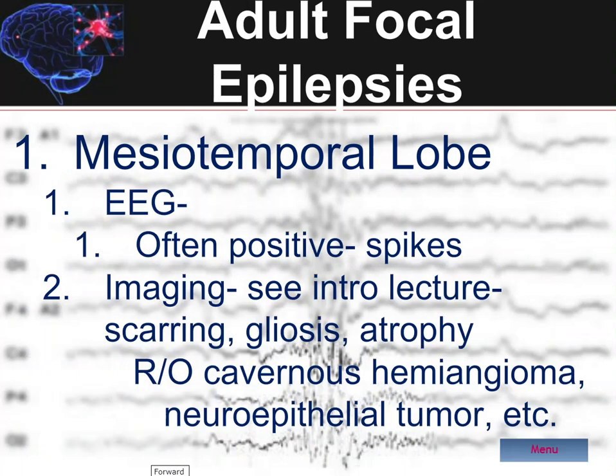The interictal EEG, obtained while the patient is not having a seizure, is often positive in mesiotemporal focal epilepsy and shows spikes and sharp waves in the anterior temporal regions. During the seizure itself there is a preceding epileptiform discharge and then rhythmic theta spike-wave activity, which may then spread to the other side.